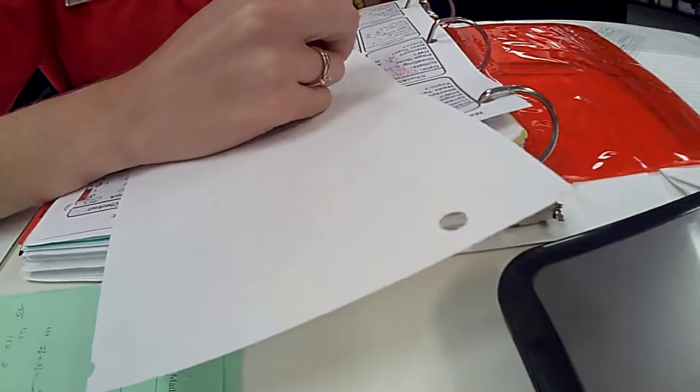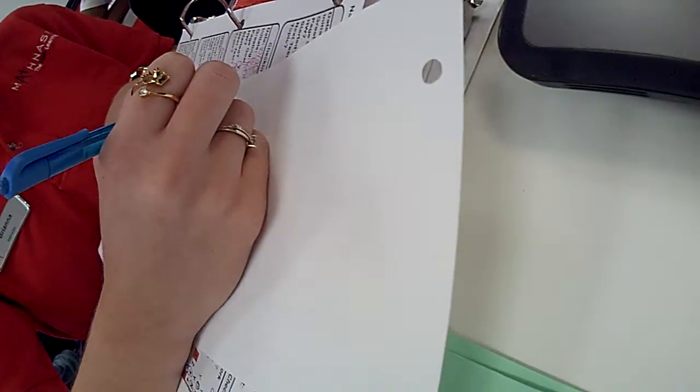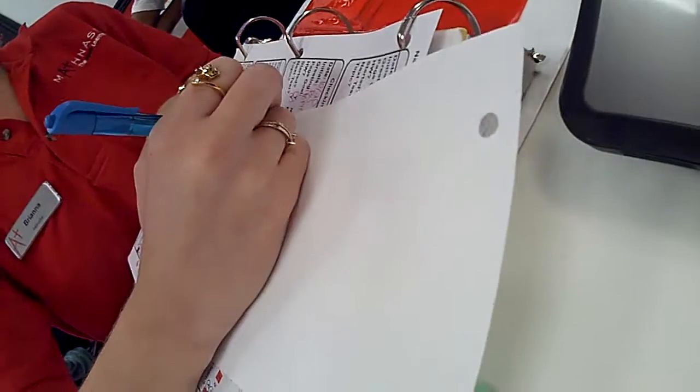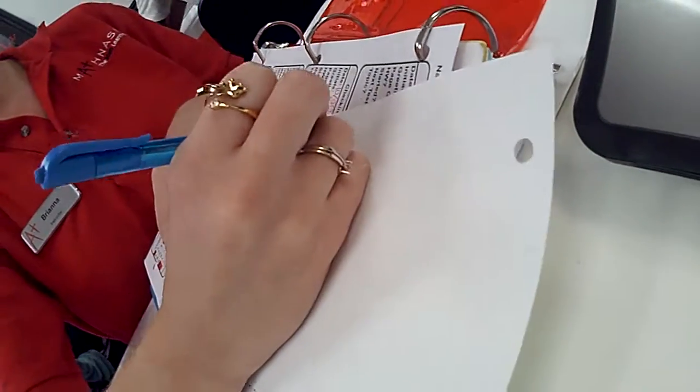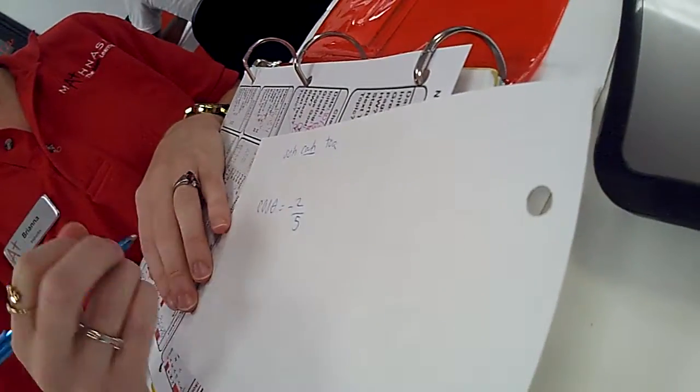So if cosine of theta equals negative 2 over 5, cosine is what? I don't know. What does cosine represent? I don't know. I've got a math mate. I got this. If you tell me, I'm just going to forget.